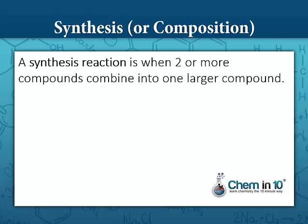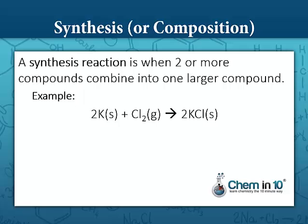A synthesis reaction is when two or more compounds combine into one larger compound. You'll be able to note a synthesis reaction because you'll have two reactants and only one product. Here we have potassium metal reacting with chlorine gas to produce potassium chloride — they synthesize potassium chloride.